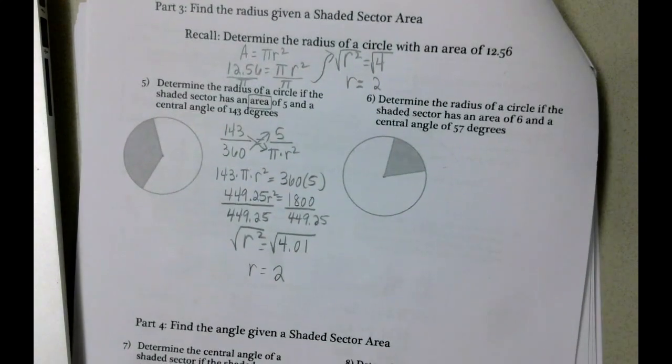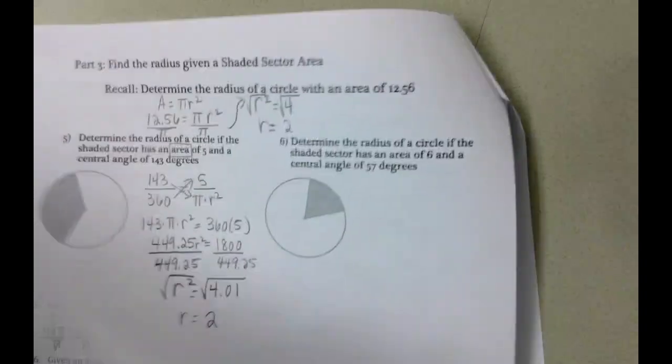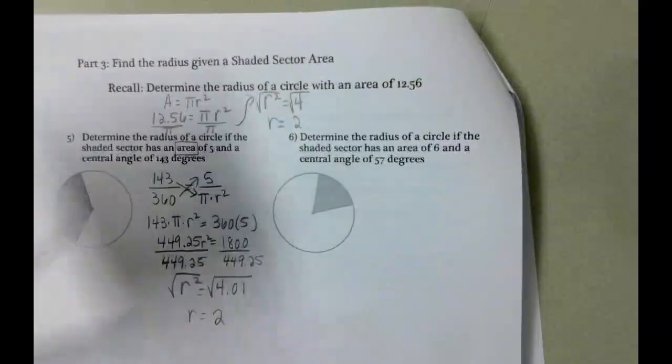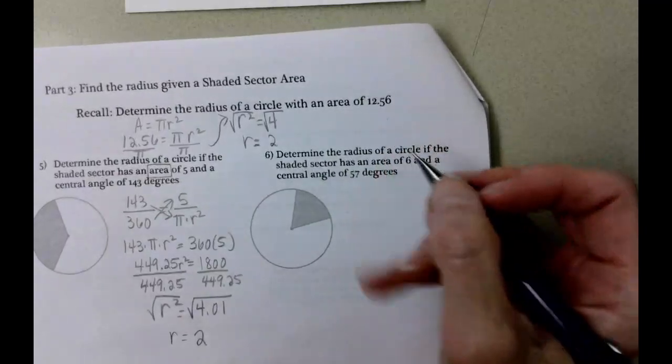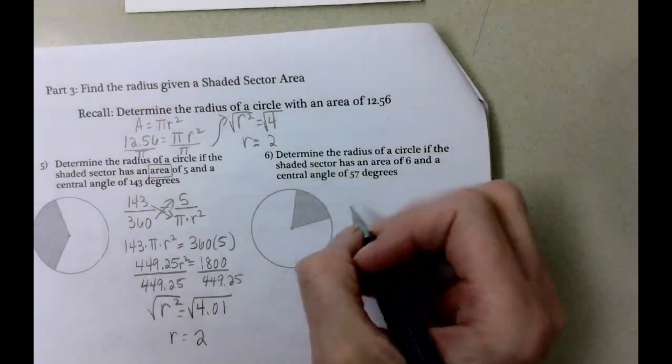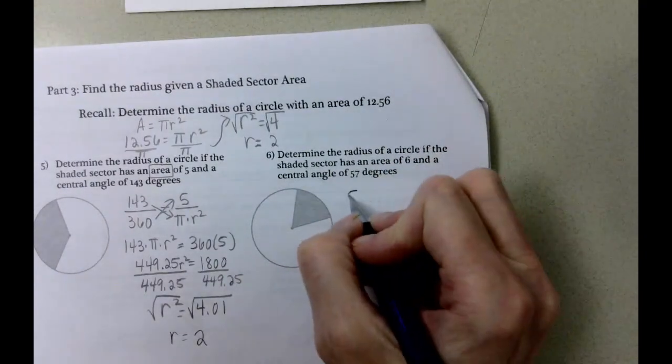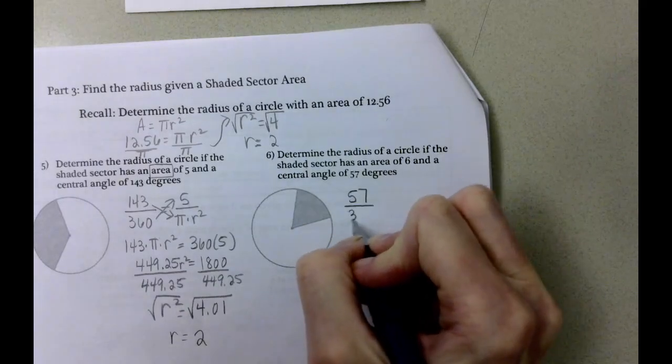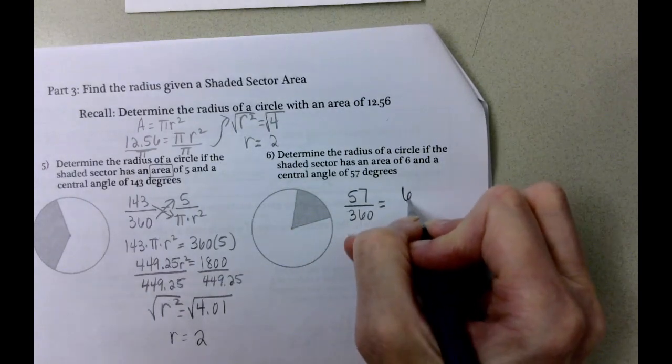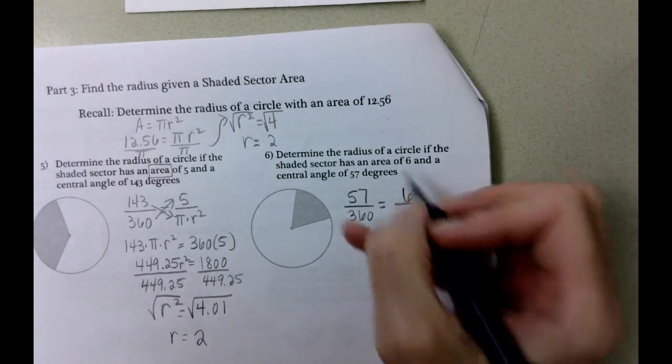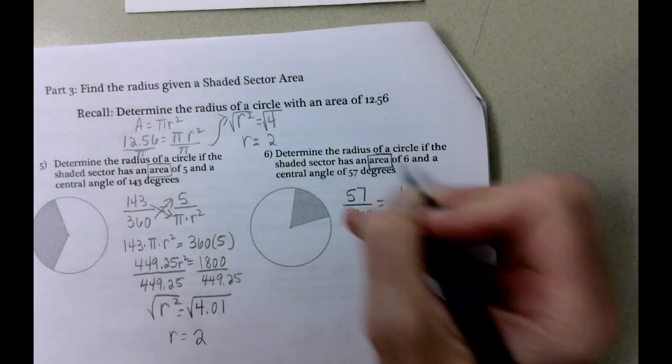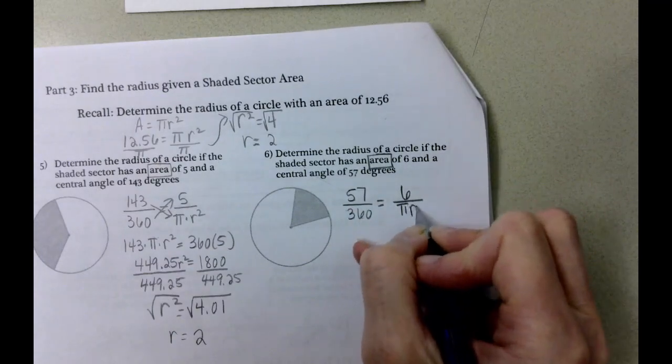Same idea here. When we look at problem number 6, nice if you've got something to look back at instead of flipping back to the previous page. Determine the radius of the circle if the shaded sector has an area of 6 and our central angle is 57. So 57 divided by 360 equals 6, there's our shaded sector area, divided by pi r squared.